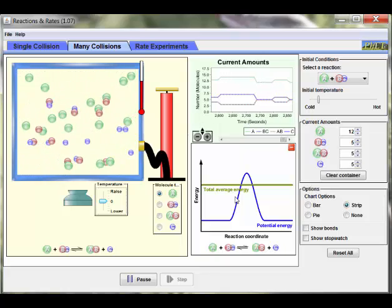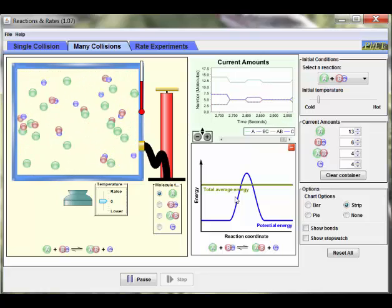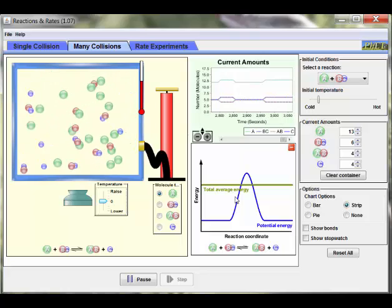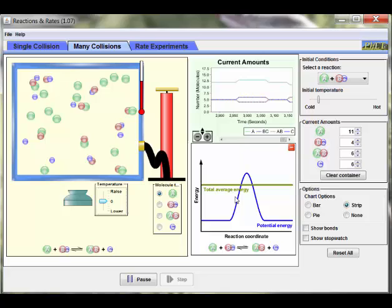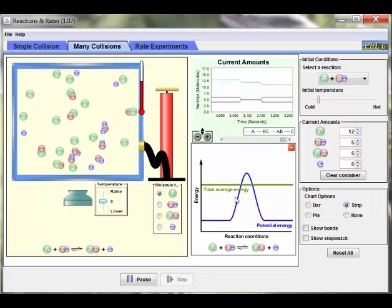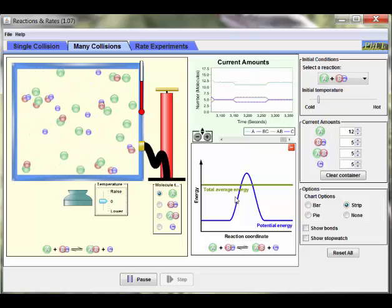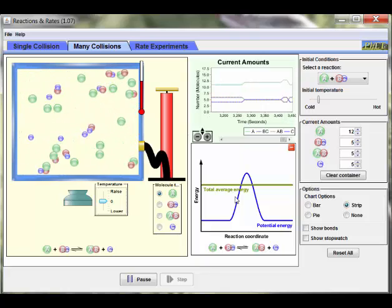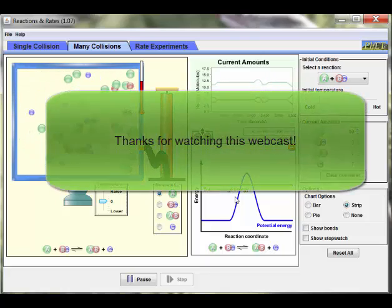Hopefully the screencast has given you a sense of what the PhET reactions and rates simulation has to offer. You should now be able to effectively use the simulation to explore kinetics more and answer the remaining questions provided to you. Please note that the answers to the follow-up questions cannot be directly found within the simulation, but that you'll actually have to apply your chemistry understanding. Thank you again for watching this screencast, and you can go to the simulation using the link below.